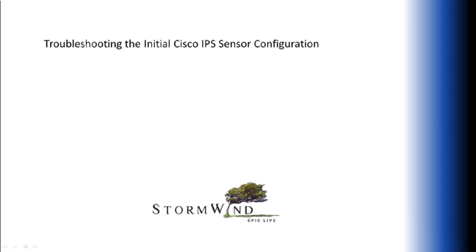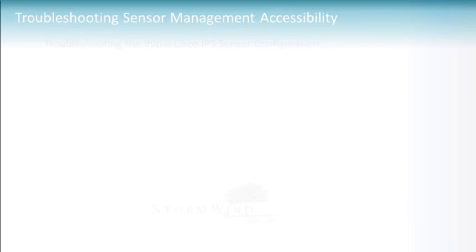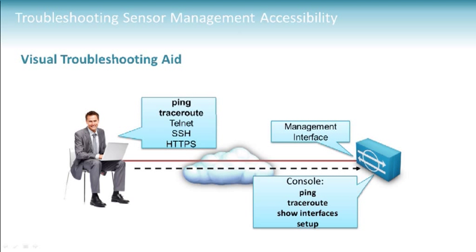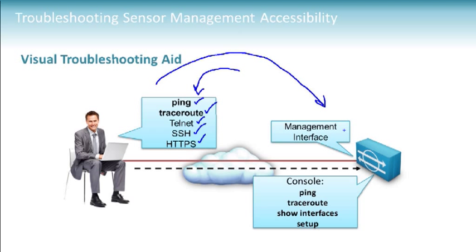Let's look at the tools you would possess when troubleshooting sensor management accessibility. From a workstation — your Windows box — you can take advantage of tools like Ping, Traceroute, Telnet, Secure Shell, and Secure HTTP to test reachability to the management interface on the intrusion prevention sensor.